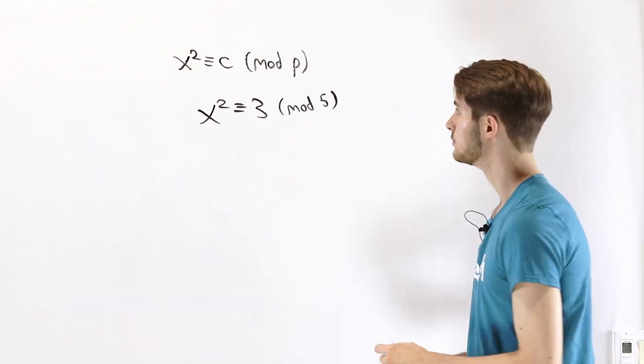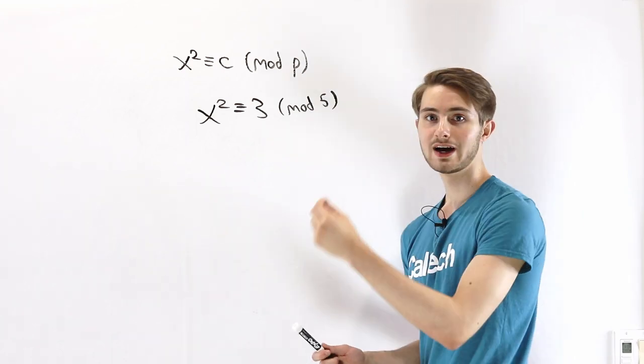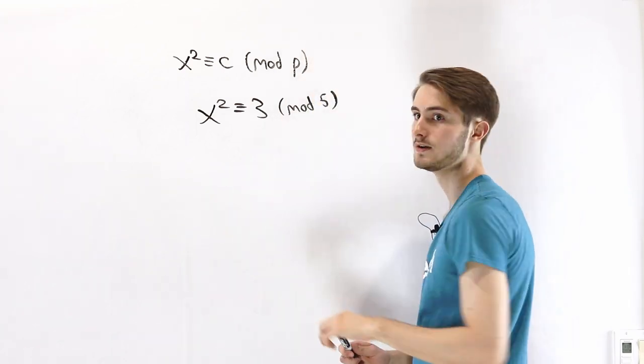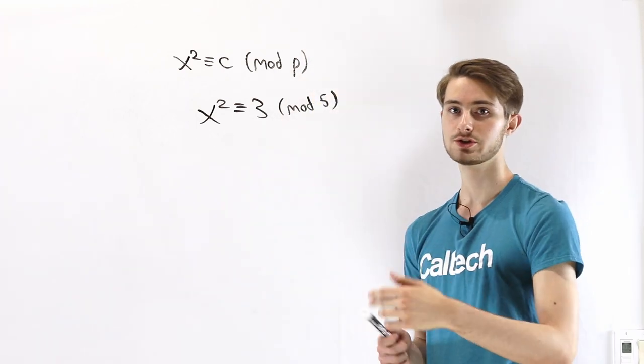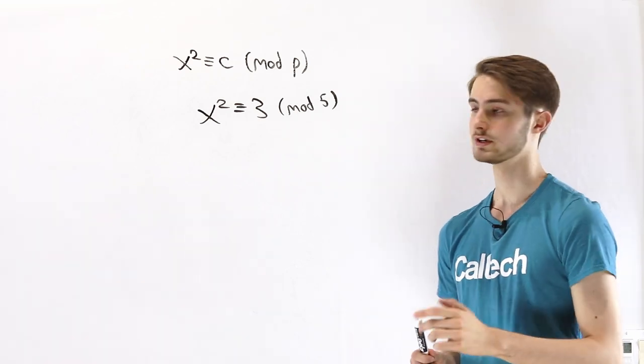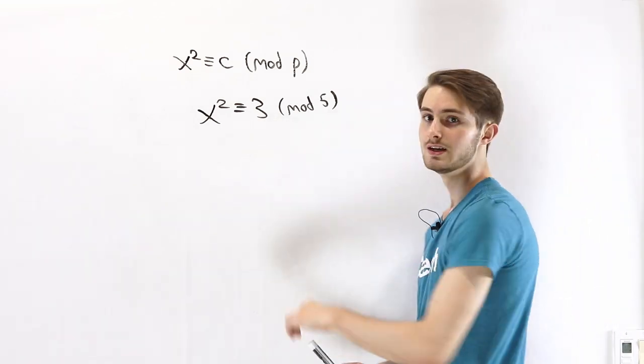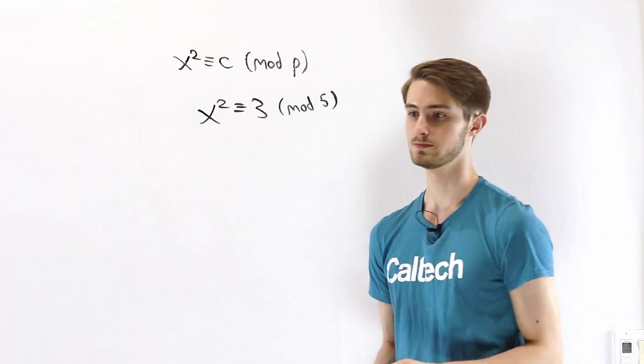When there is a solution, we say that c is a quadratic residue mod p. And when there is no solution, we say it's a quadratic non-residue. For example, we would say that 3 is a quadratic non-residue mod 5.